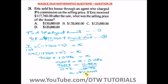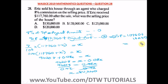Now we find the selling price by substituting x into equation two: SP equals $117,760 plus $10,240. Adding these gives us $128,000. So the selling price of the house is $128,000.